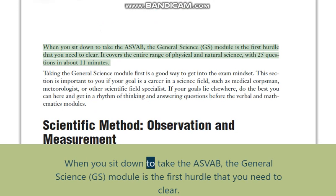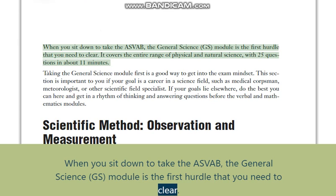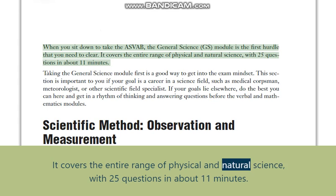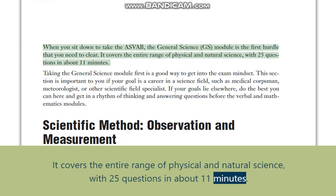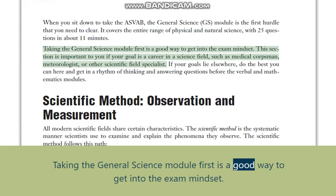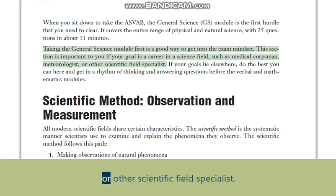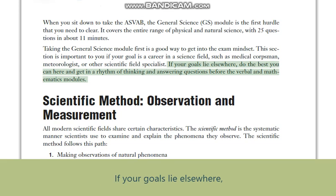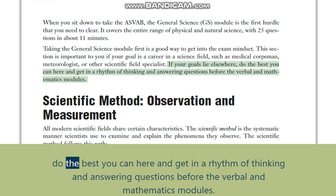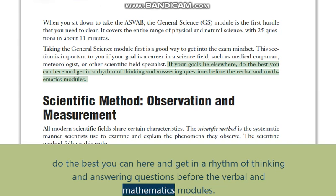When you sit down to take the ASVAB, the General Science (GS) module is the first hurdle you need to clear. It covers the entire range of physical and natural science with 25 questions in about 11 minutes. Taking the General Science module first is a good way to get into the exam mindset. This section is important if your goal is a career in a science field such as medical corpsman, meteorologist, or other scientific field specialist. If your goals lie elsewhere, do the best you can and get into a rhythm of thinking and answering questions before the verbal and mathematics modules.